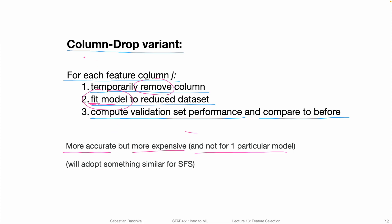The column drop variant is a very interesting and useful approach if you can afford refitting the models. We will adopt something similar later when we talk about sequential feature selection.